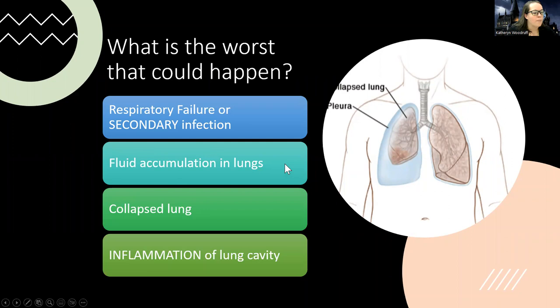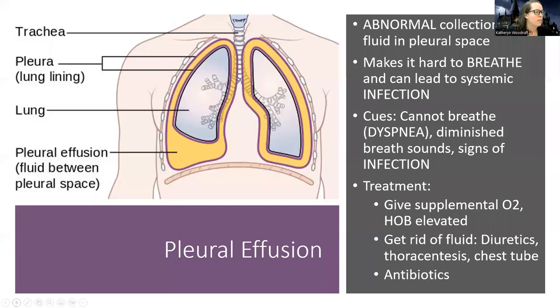The worst complications that can happen include complete respiratory failure, fluid accumulation in the lungs known as pleural effusion, a collapsed lung called pneumothorax, or inflammation of the lung cavity known as pleurisy. We'll talk about each of these.